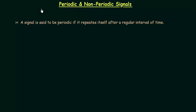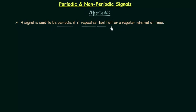In this lecture we will study periodic and non-periodic signals. Non-periodic signals are also called aperiodic signals. A signal is said to be periodic if it repeats itself after a regular interval of time — we call that signal a periodic signal.